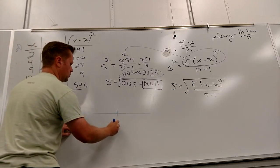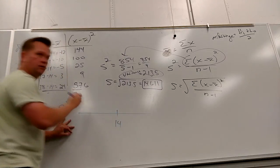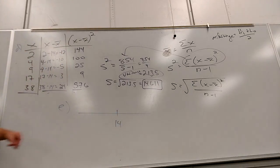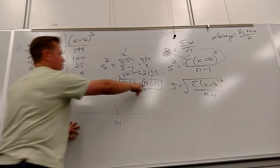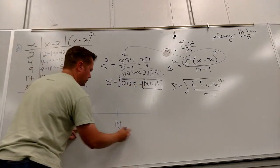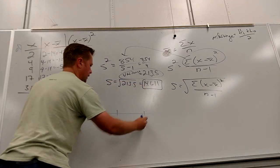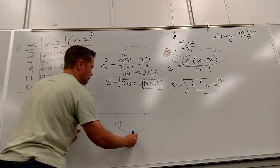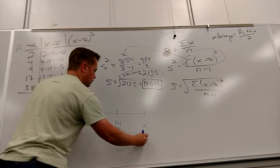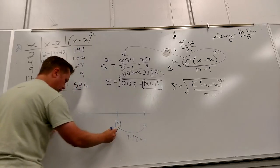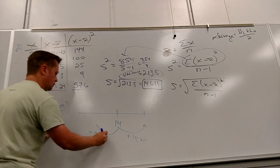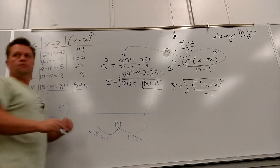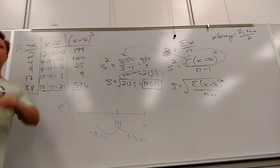The mean was 14. So what's one standard deviation up? And what's one standard deviation down — you add and subtract the standard deviation.